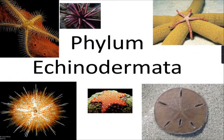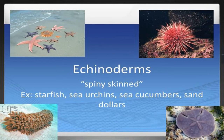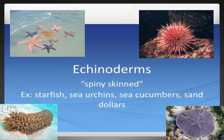Today we are going to see a new phylum of animal classification and the phylum name is Echinodermata. Echinodermata is a Greek word. If we divide it in two parts, 'echino' means spiny and 'derma' means skin.